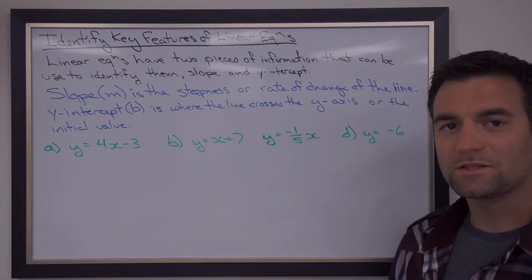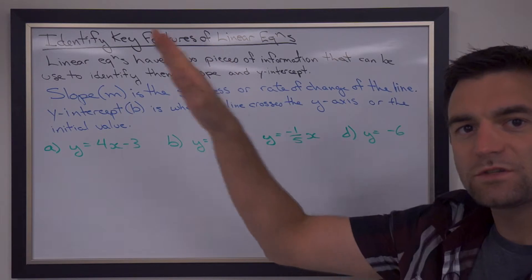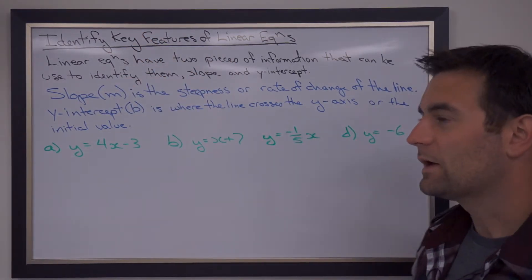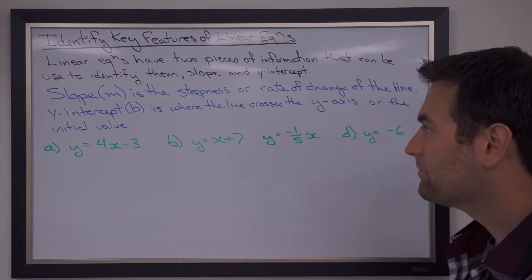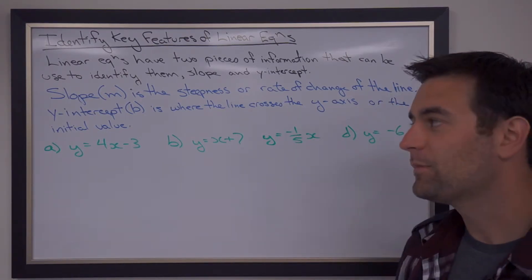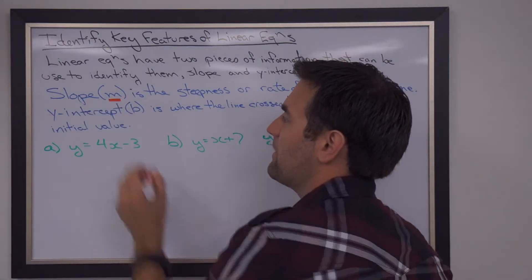The slope is the steepness of the line, so it's how steep the line is going up or how steep it is going down, kind of like the steepness of a ski hill. It's also known as the rate of change of the line. The slope is represented by the letter M.